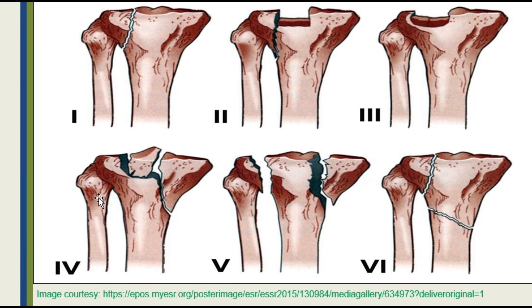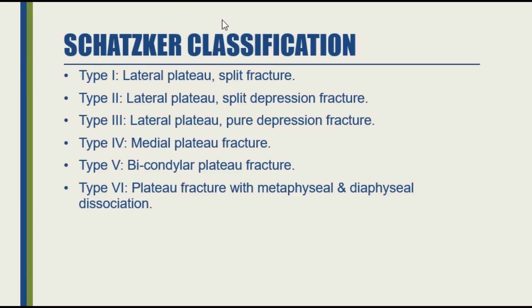To summarize the Schatzker classification: Type 1 is a lateral plateau split fracture, Type 2 is a lateral plateau split-depression fracture, Type 3 is a lateral plateau pure depression fracture, Type 4 is a medial plateau fracture, Type 5 is a bicondylar plateau fracture, and Type 6 is a plateau fracture with metaphysis and diaphysis dissociation.